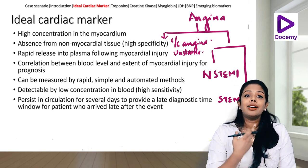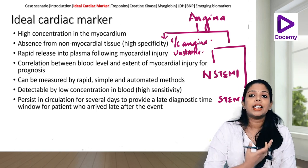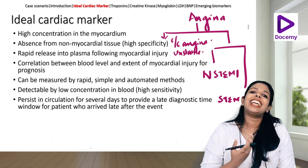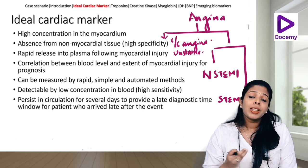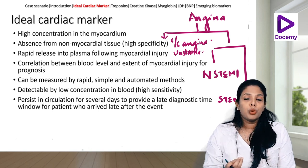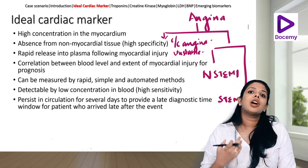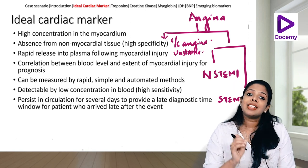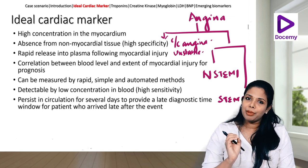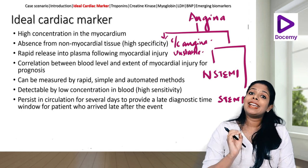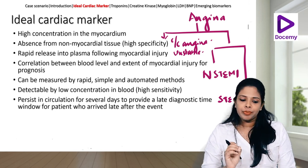Suppose a patient had an acute episode of chest pain five to six days back and is coming to your ER or OPD after five days because the pain has worsened. If you can do a cardiac biomarker and it is positive, you would have actually diagnosed the patient at the right time and prevented future complications. Hence, these cardiac biomarkers should persist in circulation for a minimum of five to ten days to provide a late diagnostic window for patients who arrive late after the event.